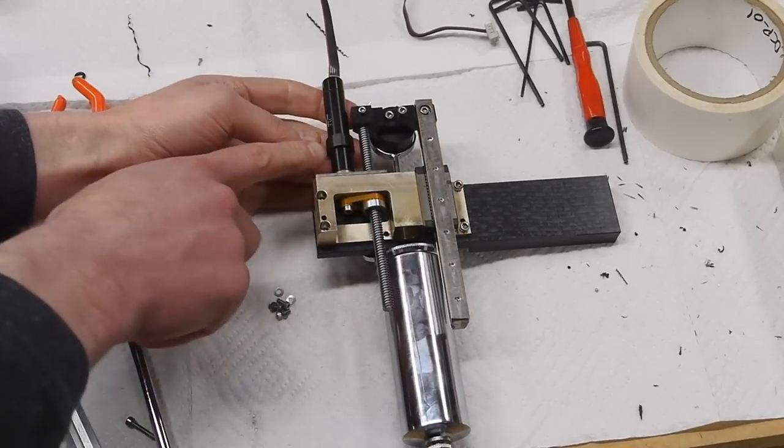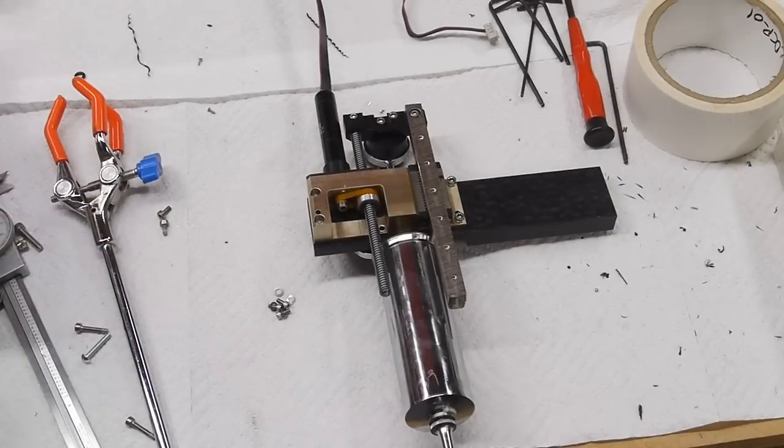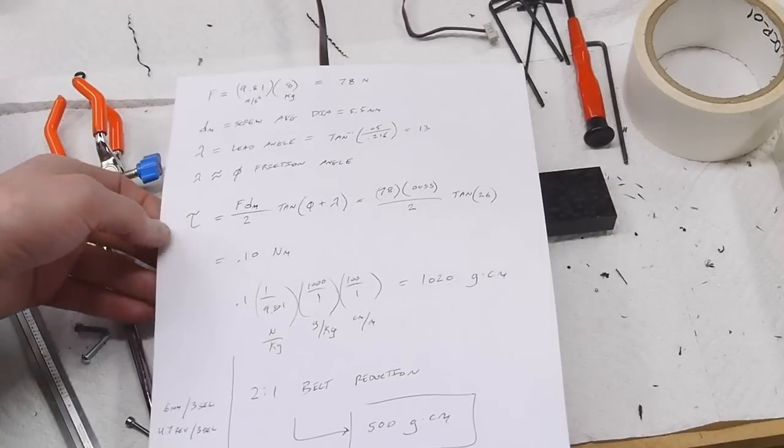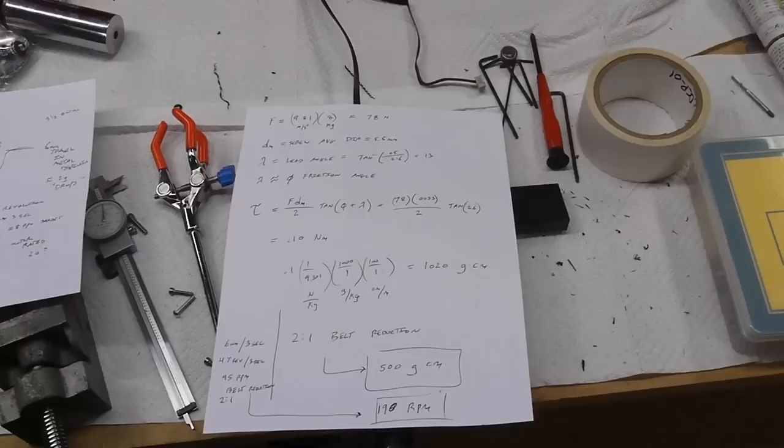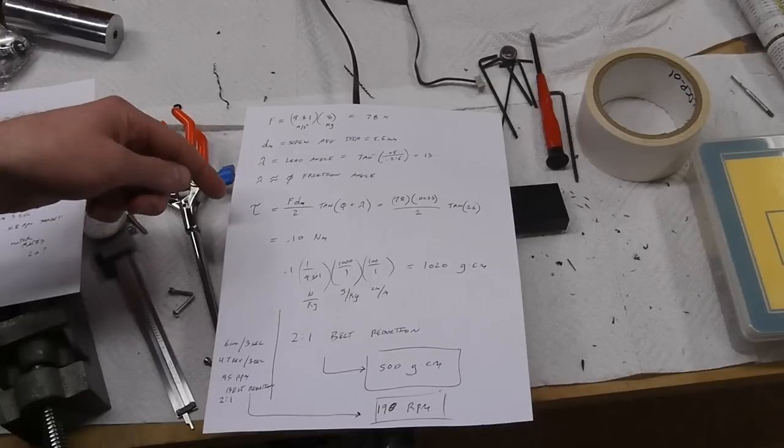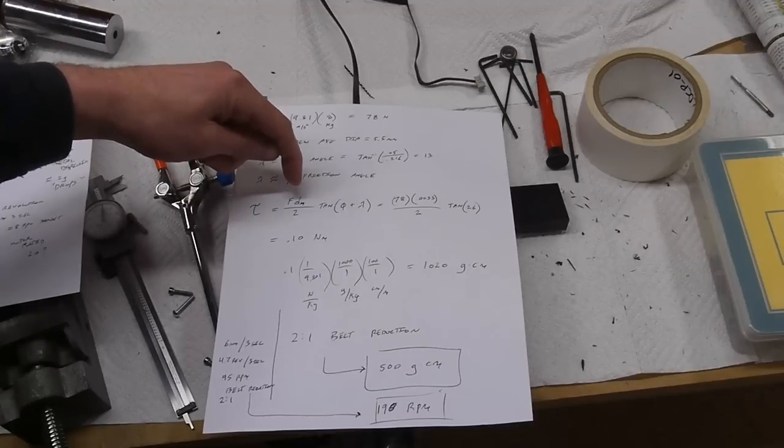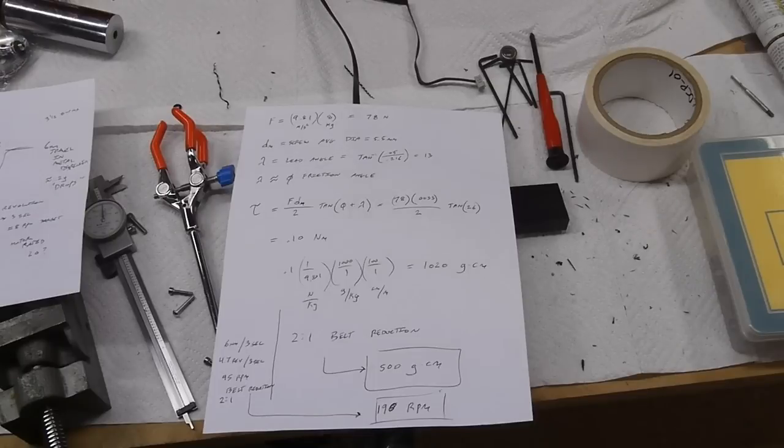Originally this lead screw didn't have this motor connected to it, so I had to figure out how much torque my motor was going to need to produce eight kilograms force here. I started browsing around and actually found the Wikipedia article on this subject to be pretty good. It's really kind of super approximation—I wouldn't trust this, although it's kind of interesting to go through the exercise. There's a formula on the Wikipedia page for torque if you know the force on the lead screw, the diameter of the lead screw, and then there's this friction angle.